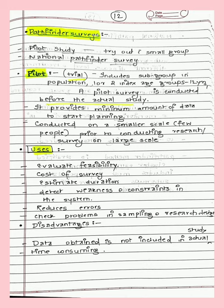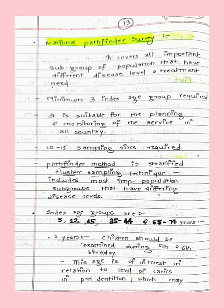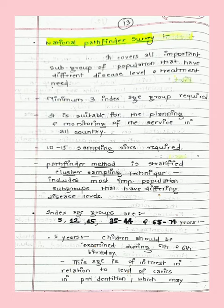The national pathfinder survey covers all important subgroups of the population selected at regional, local, and national levels. It is done on a large scale using many different index age groups because they have different disease levels and treatment needs. It has a minimum of three index age groups, is useful for planning and monitoring services across a country, and only 10–15 sampling sites are required. It uses stratified cluster sampling.